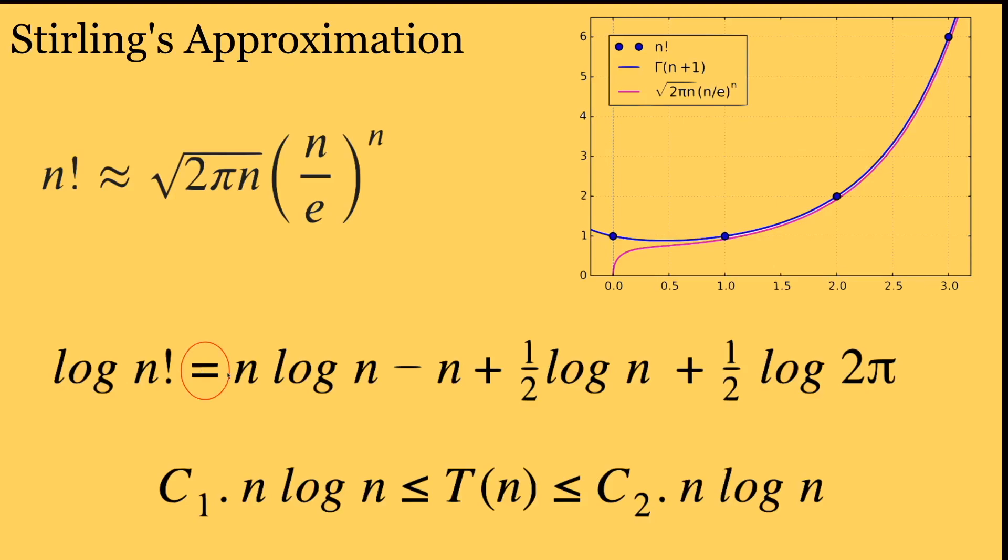Whenever you see this equality, we can do two things. First of all, get rid of everything that grows slower than the term that grows fastest. Here, the term that grows the fastest is n log of n. We can get rid of everything else compared to this. Now I can say T of n has both an upper bound and lower bound of this larger term. You can do this with every function. Whenever we find, we can write T of n as a function of n.